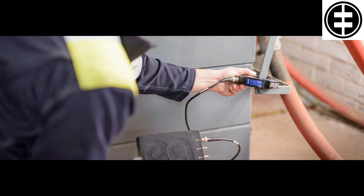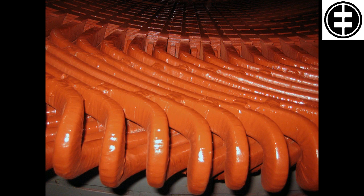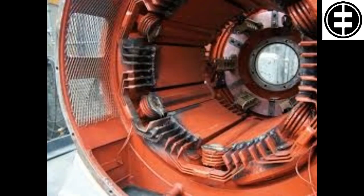If monitoring reveals a rising trend in PD levels, this may indicate that a problem exists and action should be taken to identify the source of the PD. If the increase in PD is due to ambient factors, such as a dirty or wet winding, the solution is simply to clean and/or dry the winding. The aging process is highly dependent on temperature, and if high temperatures are causing accelerated aging, the cooler can be serviced to bring them back down to normal levels.